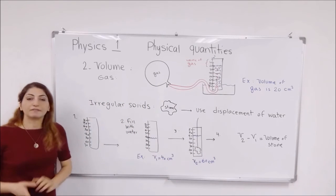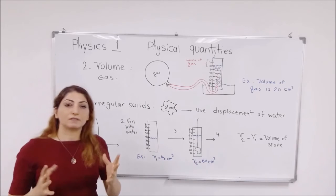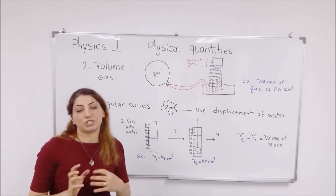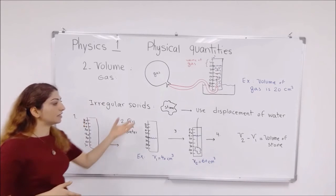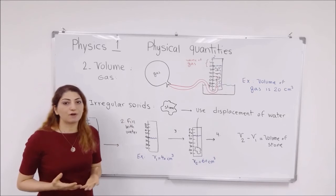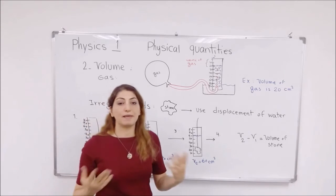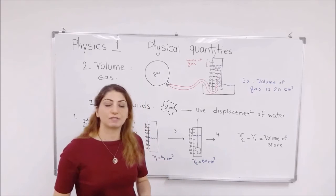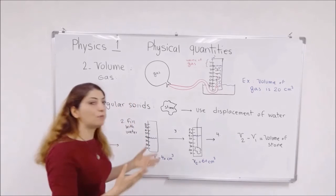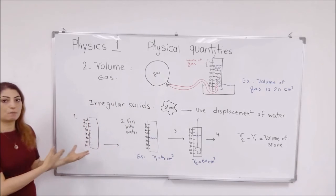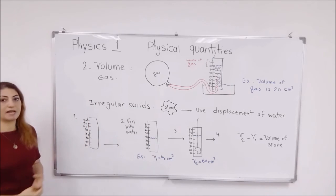Now, if you have an irregular solid, an irregular solid doesn't have a defined shape, like a stone, how can we find its volume? You can use this method called displacement of water. I'll show in my diagram step by step.